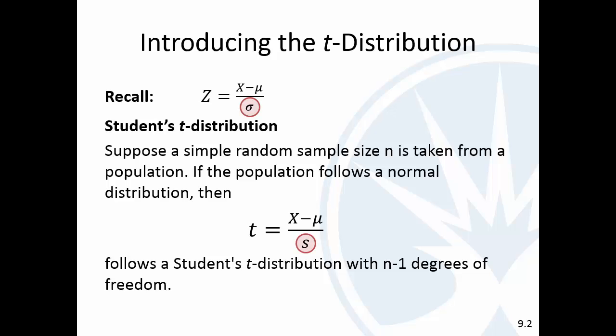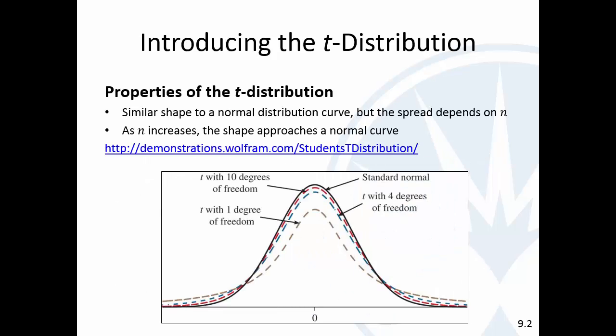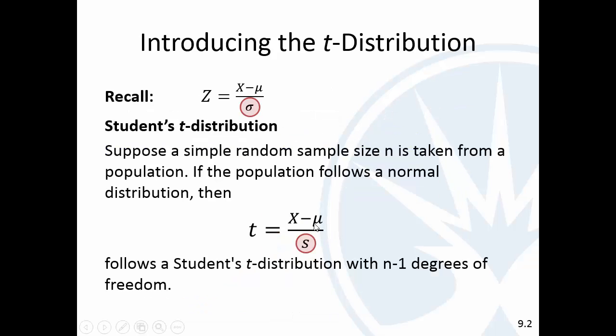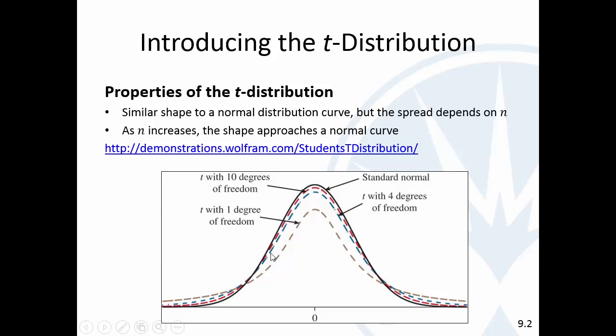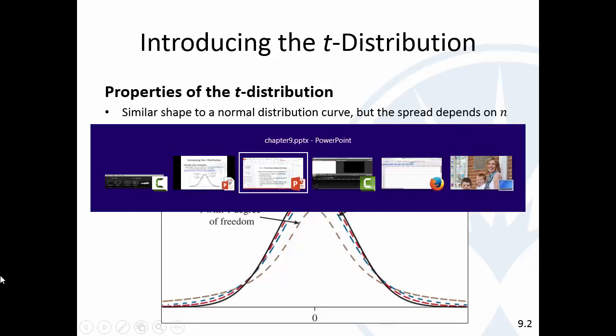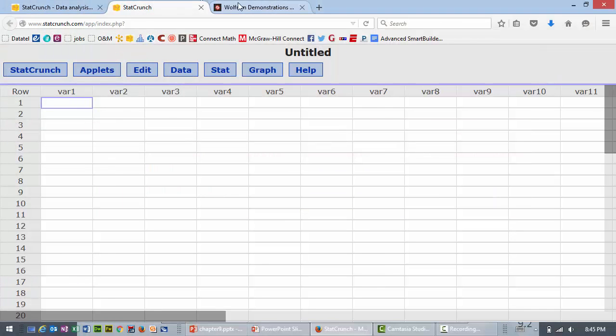So, you'll notice here the big difference is that the denominator for a z is sigma. The denominator for a t is s. And so, because s varies, it's not as consistent. Like, sigma is what it is, right? Where s can vary based on the sample. So, the t distribution looks very similar to a normal distribution. But it's a little more uncertainty, so it's more spread out. And I have a visualization here. Let me see if I can get it up. There it is.